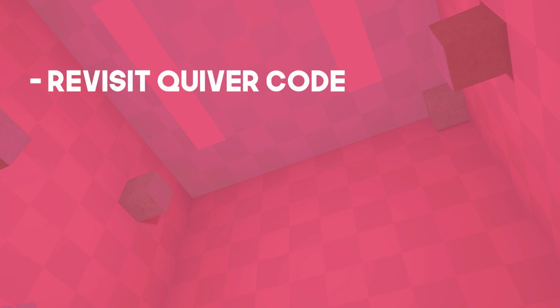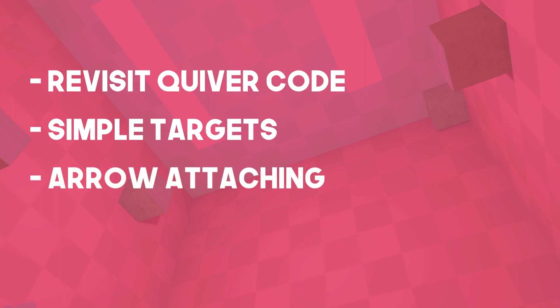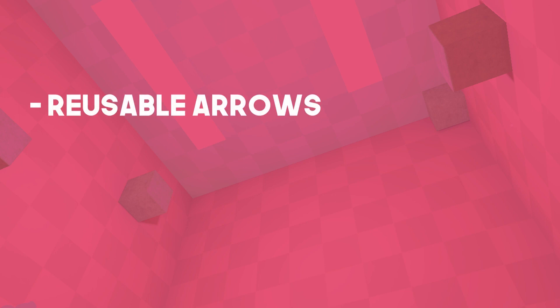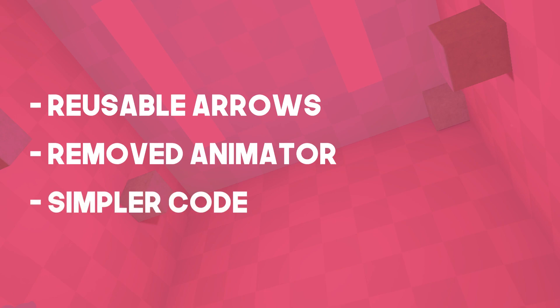I wanted to revisit the quiver code to make it behave better when being used over the shoulder. I wanted to create some simple targets that move when hit by arrows. I also wanted the arrows to stick with an object once they were hit — I neglected to do this in the previous iteration because if objects weren't uniformly scaled, it can create some wonky things. To facilitate both of those things, I wanted to create a simple system for objects to handle arrow impacts. I also included improvements where you can now reuse arrows that you fired, removed the need for an animator for pulling the bow back, and overall simplified a lot of the code within the project.